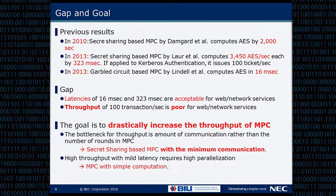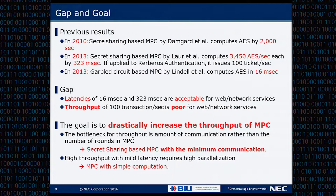Looking at these results, we see a gap. Latency of 6 to 300 milliseconds is acceptable for most web services. On the other hand, throughput of around 100 transactions per second is very poor for web services. What we had in mind is that we have to drastically increase the throughput of multi-party computation. This is what we want to do, to apply this technology as a countermeasure for data breach.